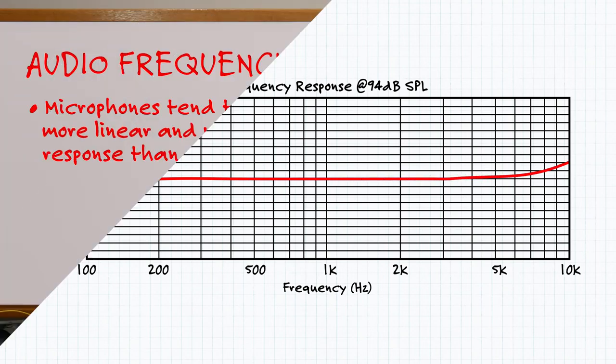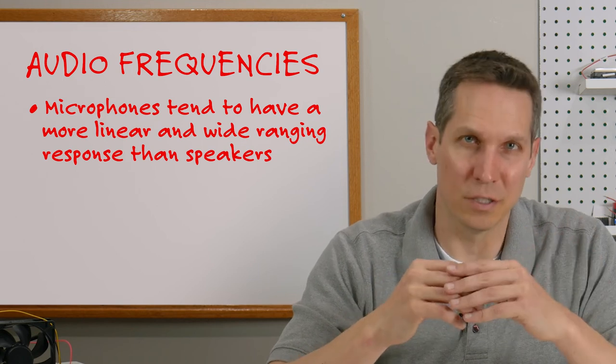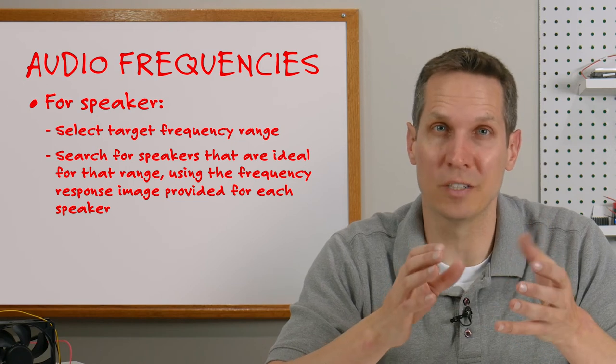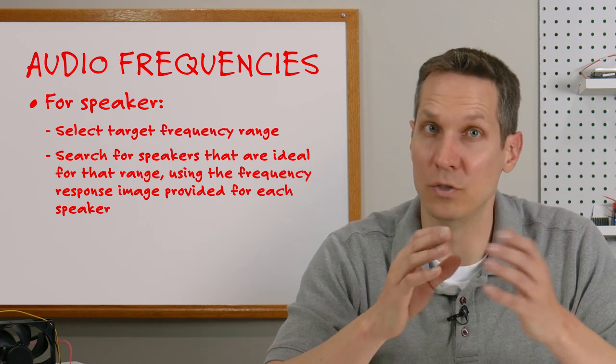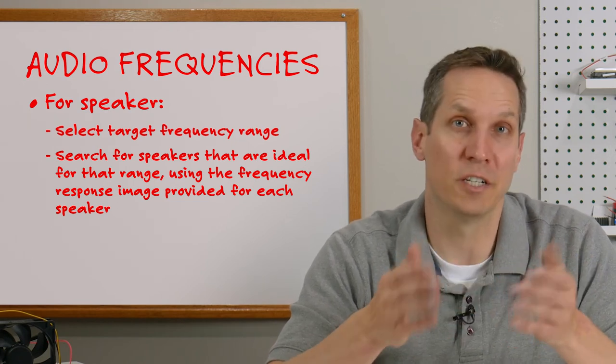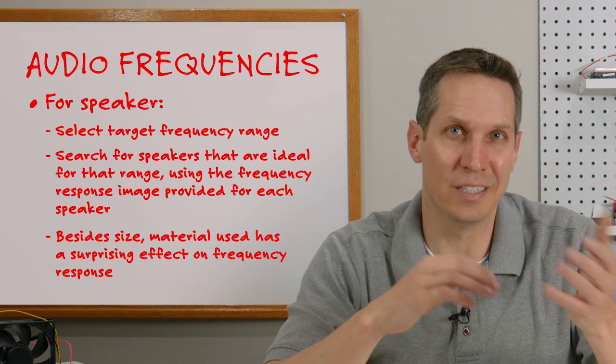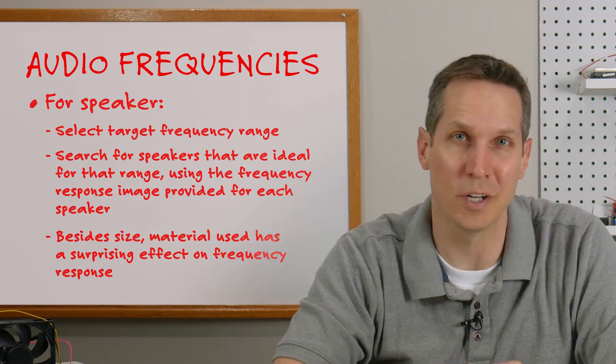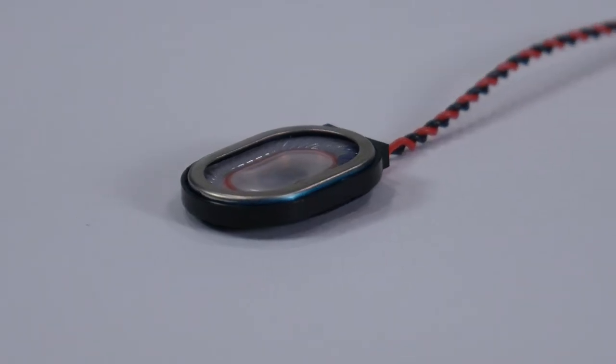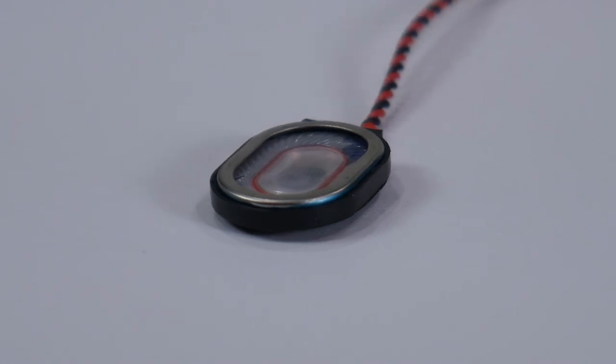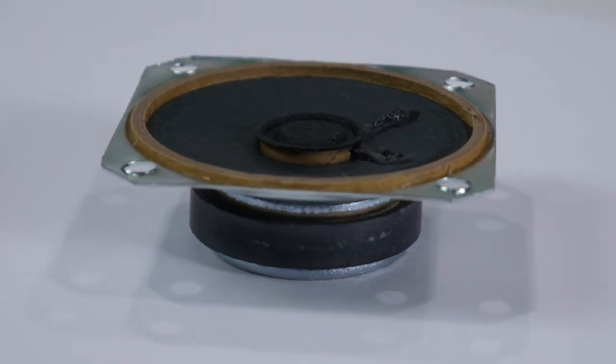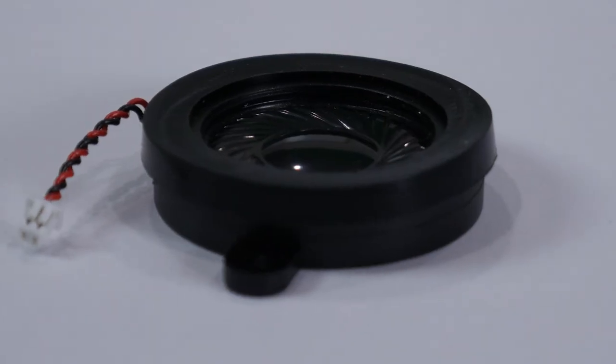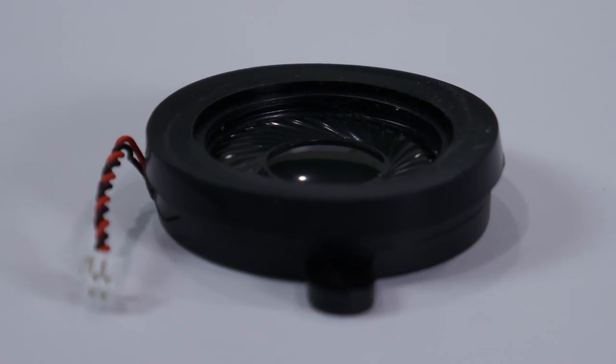Now that we understand the basics, we can apply these principles to speaker selection and enclosure design. For the speaker, you need to select our target frequency range and start searching for speakers that are ideal for that range, using the frequency response image provided for each speaker. As you do this, you will find that, besides size, the material used in the construction of the speakers has a surprising effect on frequency response. Speaker materials need to be light so that they can be responsive, but they also need to be stiff so they don't deform when moving. At CUI Devices, we usually use paper and mylar as they're both light yet stiff. However, mylar is also resistant to moisture and humidity.